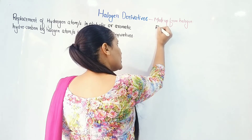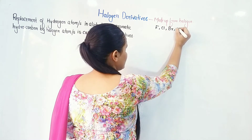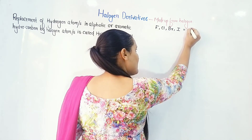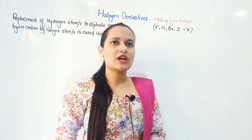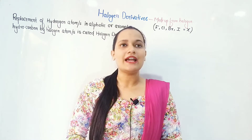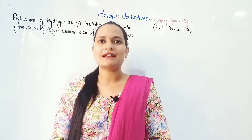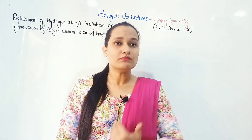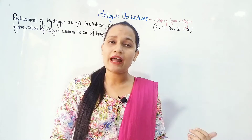Students, we have halogens — they are fluorine, chlorine, bromine, or iodine. These are all the halogens. We use the alphabet X in place of halogen, so whenever you see X in this chapter, it indicates halogen. X means it can be any of fluorine, chlorine, bromine, or iodine. In this chapter, we are going to study things that are made from halogen.